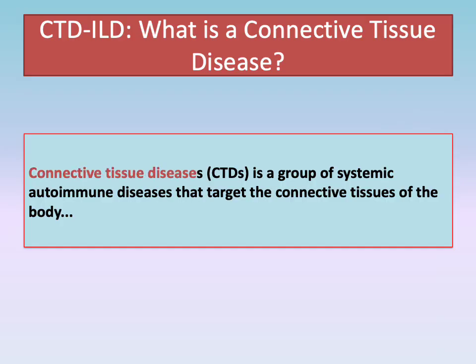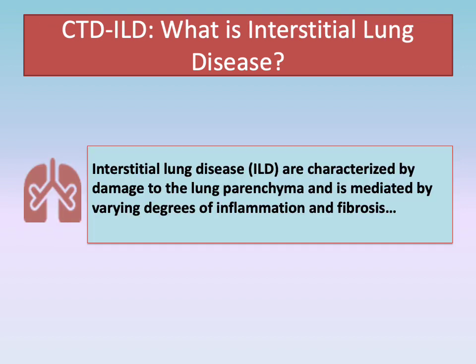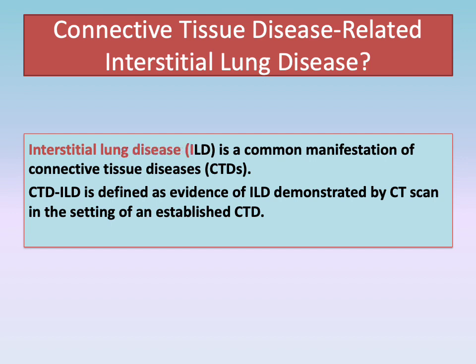What is connective tissue disease? Connective tissue disease is a group of systemic autoimmune diseases that target the connective tissues of the body. Connective tissues are present in the skin, joints, blood vessels, kidneys, and lungs. What is interstitial lung disease? Interstitial lung disease is characterized by damage to the lung parenchyma and is mediated by varying degrees of inflammation and fibrosis. CTD-related ILD is defined as evidence of ILD demonstrated by CT scan of the lung in the setting of an established connective tissue disease.